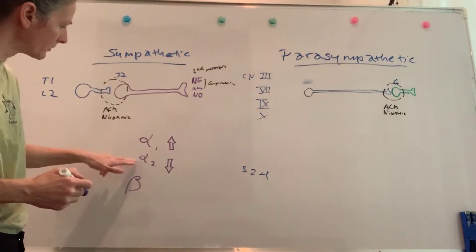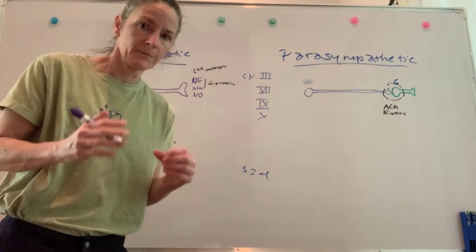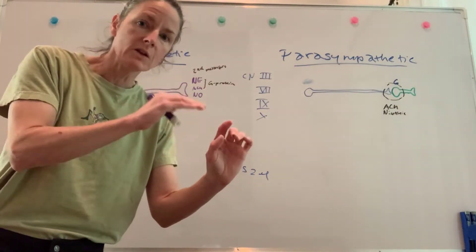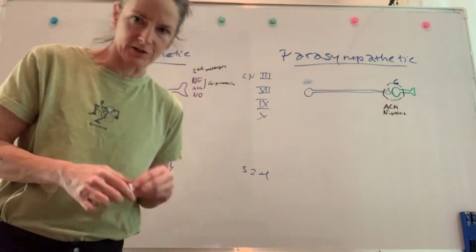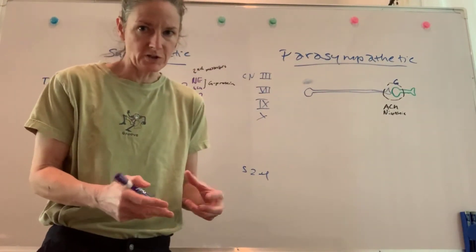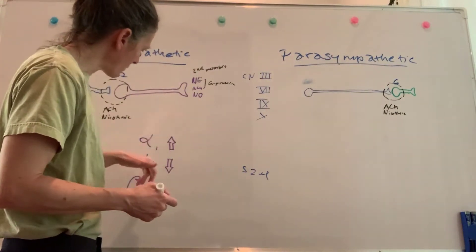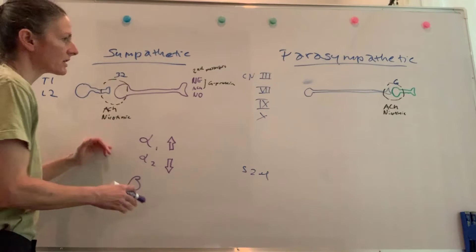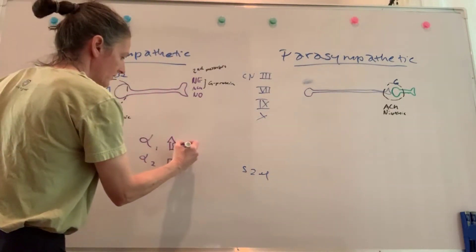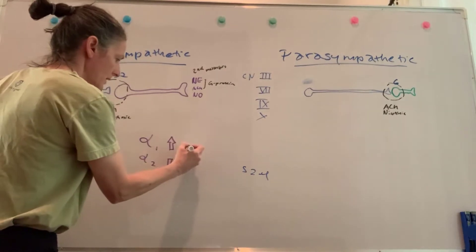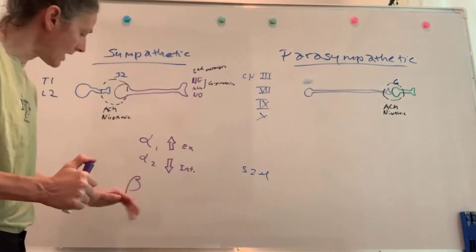We actually see some alpha-2 receptors on some of our parasympathetic targets, because the sympathetic division is going to shut down the parasympathetic division. When it's time to activate the system and sound the general alarm, this is one way the sympathetic division exercises control over the parasympathetic division. So alpha-1 has an excitatory effect, while alpha-2 often has an inhibitory effect on target cells.